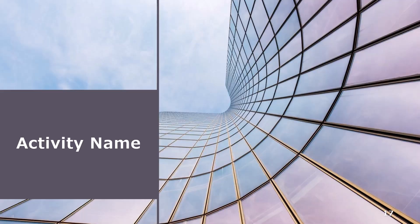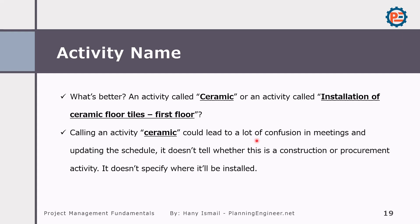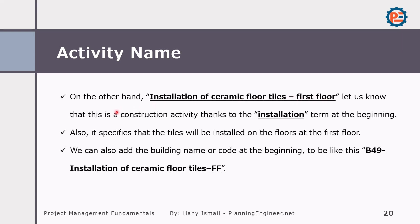Now for the activity name — it is important to have a very clear activity name. You cannot call an activity just 'ceramic' — that is not sufficient, no level of detail is provided. Instead, call it 'Installation of ceramic floor tiles, first floor.' This is more specific and gives the reader the required information. The term 'installation' also specifies this is a construction activity, not a shop drawing or procurement. You can also add the building code like B49 to reference a specific building.